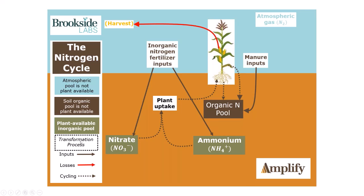We also know that previous to inorganic fertilizers, we were somehow getting nitrogen into plants, and we know that the organic pool is not directly contributing to plant uptake. So there must be some type of transformation processes. Moving on, the dotted-line boxes on this diagram will represent transformations of nitrogen in the soil. The first one we'll talk about — probably the most interesting — is mineralization.